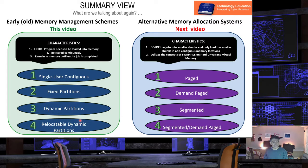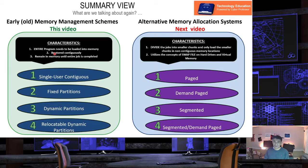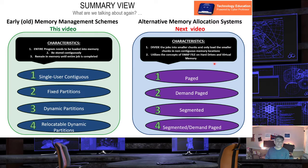The characteristics of these four early memory management systems include that the entire program needs to be loaded into memory — keyword: entire. Also, programs need to be stored contiguously within the memory space — keyword: contiguously. Finally, jobs or programs need to remain in memory until the entire job is completed. Next week we will cover the alternative memory allocation systems, which include paged, demand paged, segmented, and segmented demand paged.